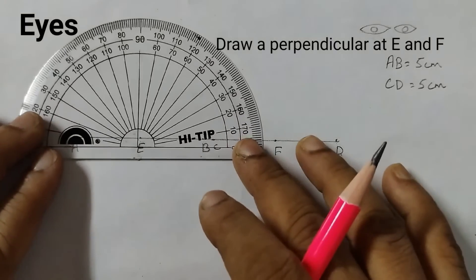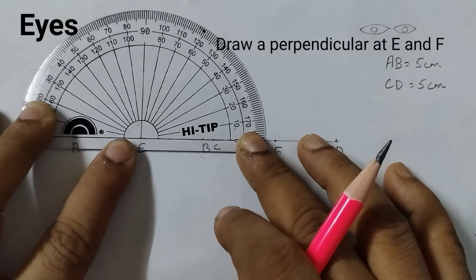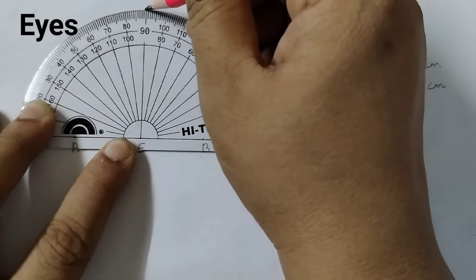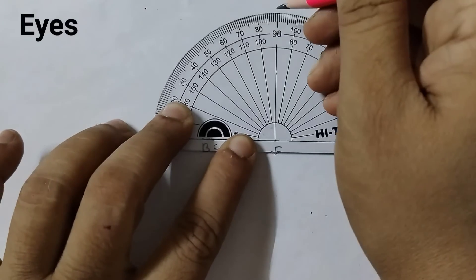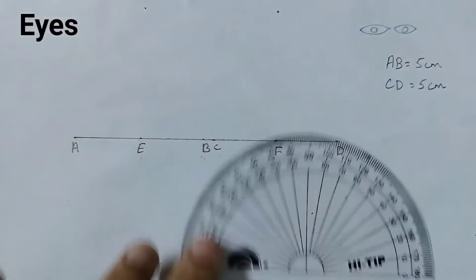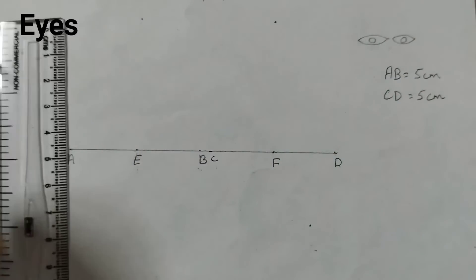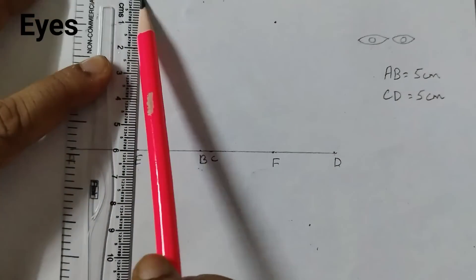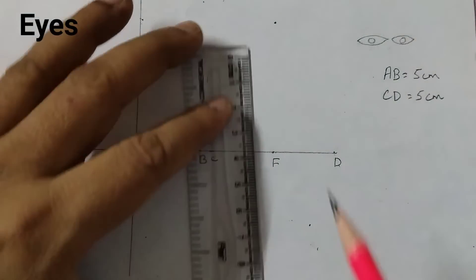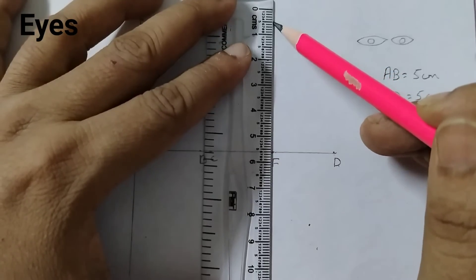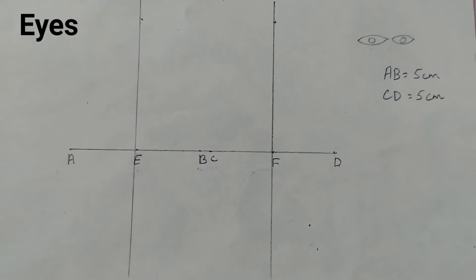Next, take a protractor and draw perpendicular at point E and F. Mark a point at 90 degrees on both. Now join these points. Draw a light line because we are going to erase all of this. I hope this much is clear.